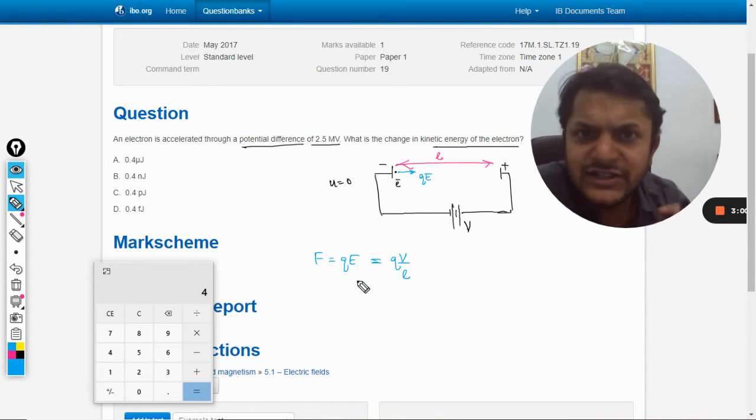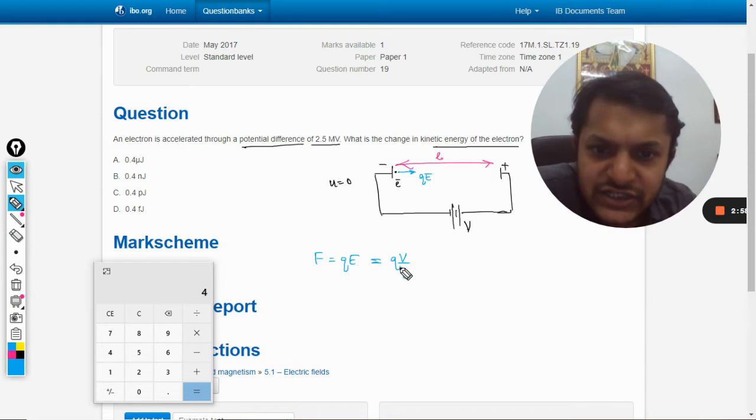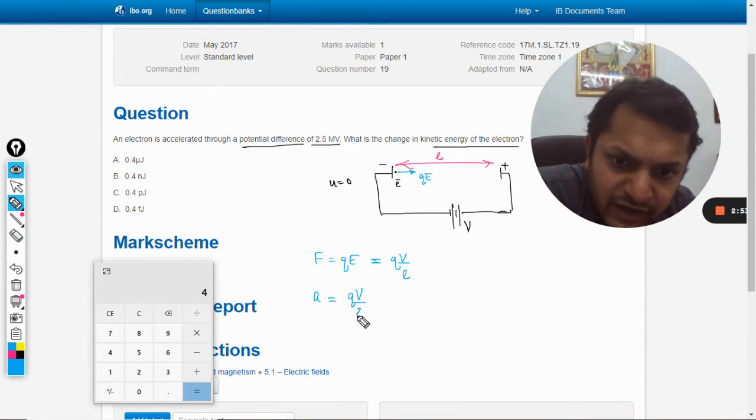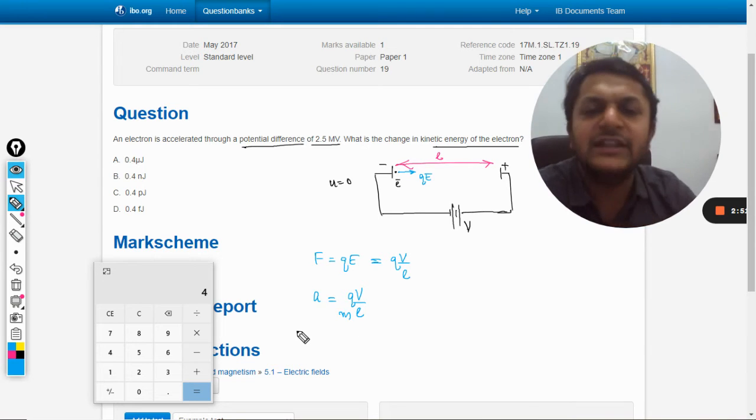I will be telling you that also, just give me two minutes for this. So this is the force and what will be the acceleration? Acceleration will be Q into V divided by L divided by the mass of the electron. So this will be the acceleration.